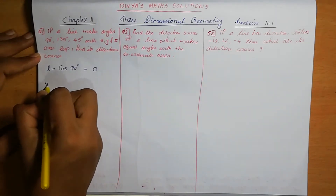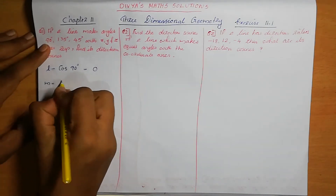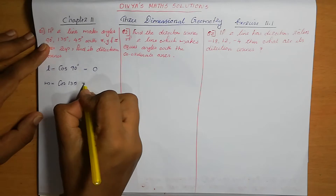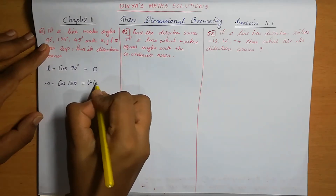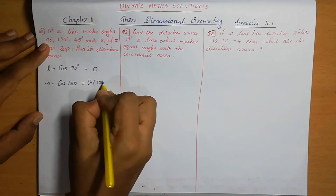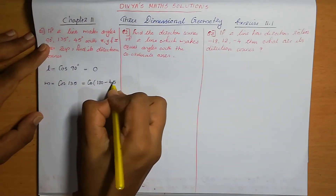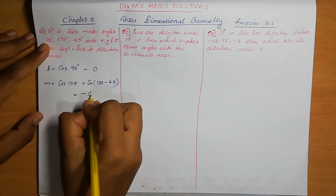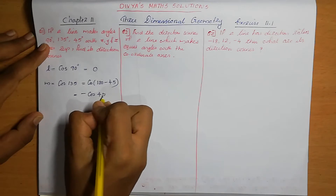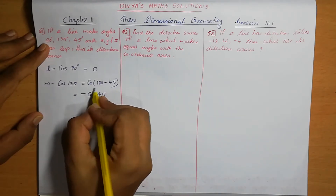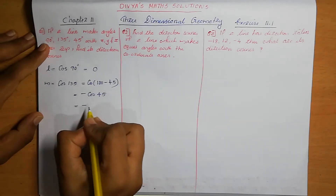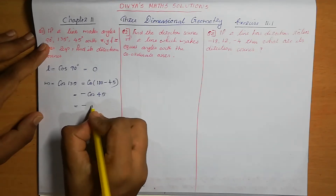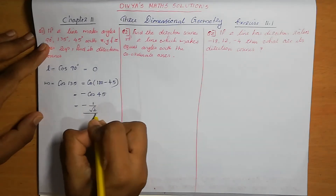So we can write L equal to cos alpha, that means cos 90 degrees. Cos 90 is 0. Next, M is cos beta, that means cos 135. Cos 135 means we can write as cos(180 minus 45), which equals minus cos 45, that is minus 1 by root 2.